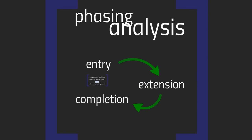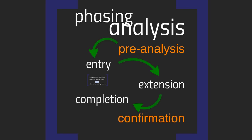Hurst defined three stages to the process: the entry stage, the extension stage, and the completion stage. In developing Sentient Trader software, I defined two additional stages: a pre-analysis stage before the entry stage, and a confirmation stage after the completion stage. The entire phasing analysis process is highly iterative — information gained feeds back into earlier stages, so you find yourself repeating stages, which is why a clear understanding of each one is very important.